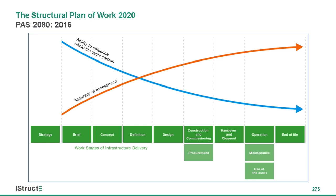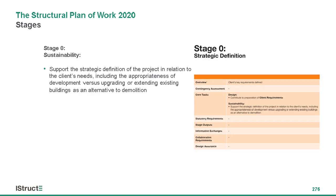This is from PAS 2080, a publicly available standard for carbon management in infrastructure published by British Standards. The key reason for showing this is the blue arrow, where the ability to influence the whole life cycle carbon is higher at the earlier stages — particularly brief and concept design — and then decreases as you move through the project. This is another reason why we've put a lot of emphasis on developing a structural sustainability report in the early stages, so that people are aware of what's going on as we move through the project.